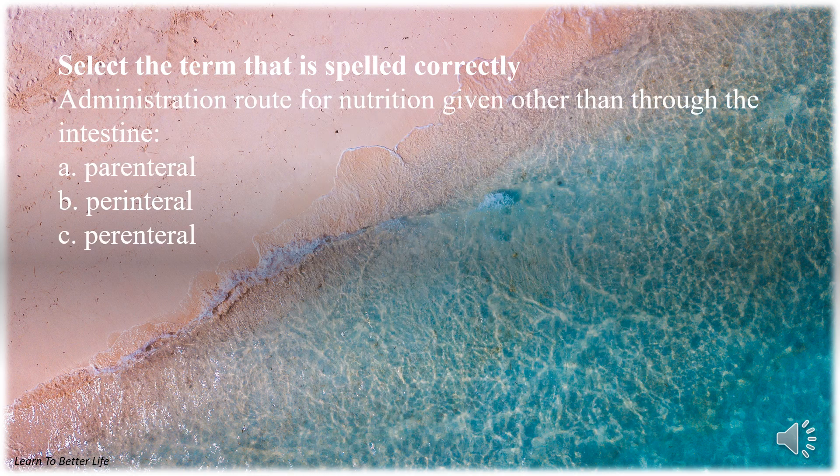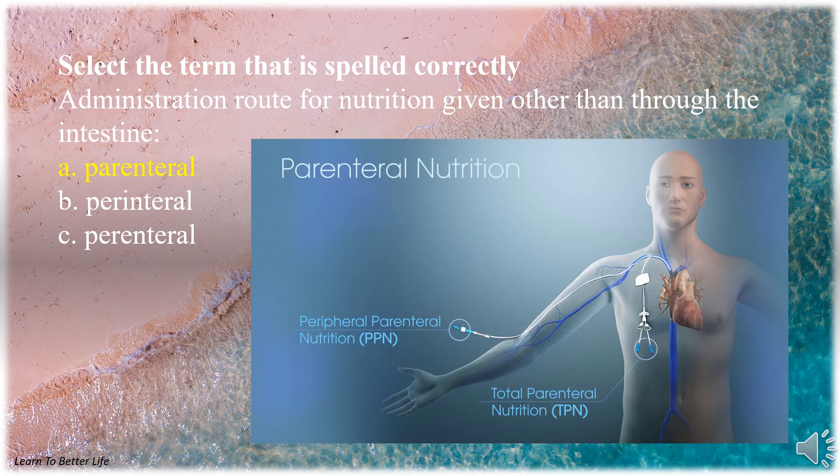Select the term that is spelled correctly. Administration route for nutrition given other than through the intestine. A. Parenteral. B. Parenteral. C. Parenteral. The answer is A. Parenteral.